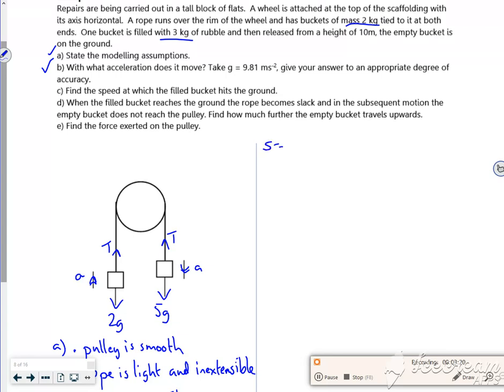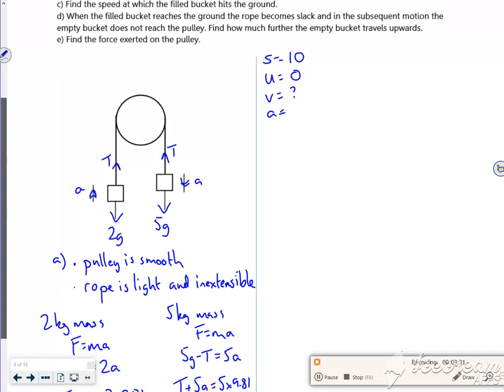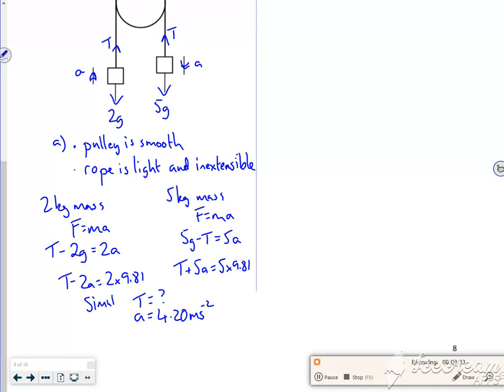So the positive direction is going down. So S is 10. Initially it's at rest. V is what I want. My acceleration is whatever I worked out there, 4.20.